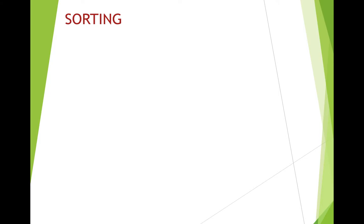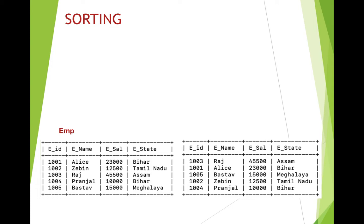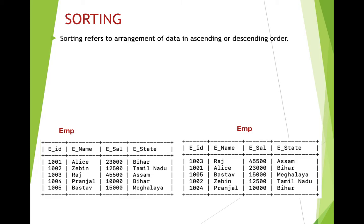Let's begin with the concept of sorting. Sorting means arrangement of data in ascending or descending order. Consider a table named 'emp' — pay attention to the salary column. The salary is not arranged in any order, neither ascending nor descending. But using sorting commands in SQL, the employee salary can be arranged in descending order, from greater to lower.